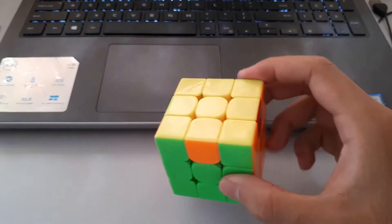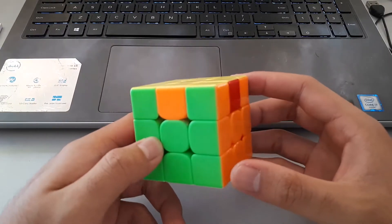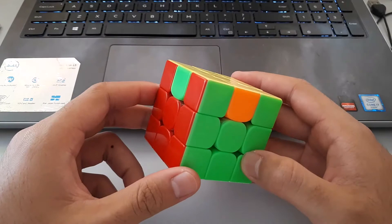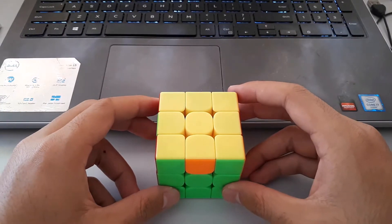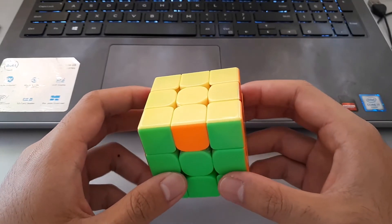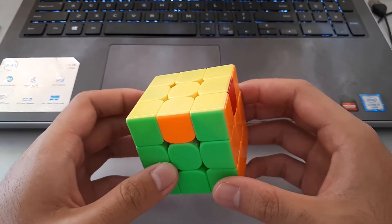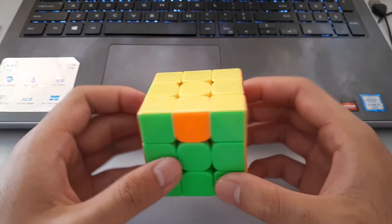So the problem with the R-U U-perms, as you could probably tell, is the weird finger tricks that it involves. And if you want to avoid those finger tricks, you'll have to re-grip a lot as well. So that's why I don't use those. I use the M-U U-perms because they don't involve any re-grips and they don't really have weird finger tricks. It's just M-U moves. So this is the U-A perm.